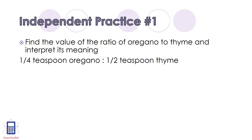For those of you familiar with my other videos, we're going to switch it up a little bit here. From now on, the independent practice problems will be right at the end of each video. So let's look at independent practice number 1: find the value of the ratio of oregano to thyme and interpret its meaning. The ratio is 1 fourth teaspoon of oregano to 1 half teaspoon of thyme.